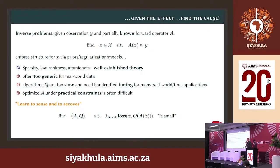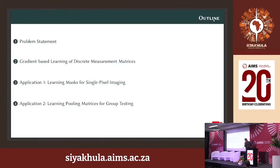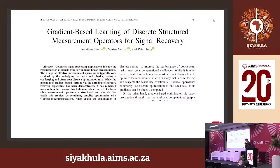This talk promotes the idea of learning to sense and to recover — optimizing recovery algorithms and sensing strategies in machine learning terminology, where we minimize some expected loss. The outline covers a detailed problem statement, one key idea for doing this, and depending on time, two applications.